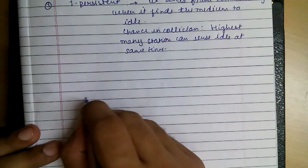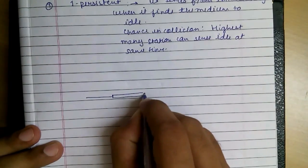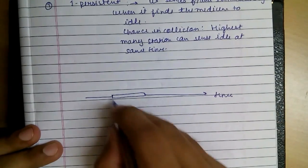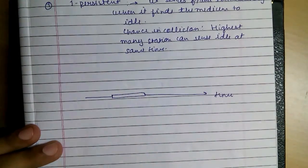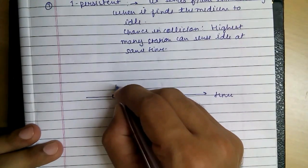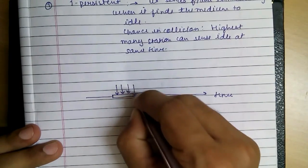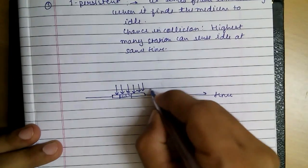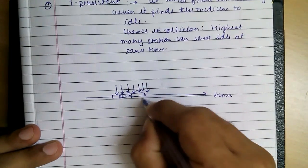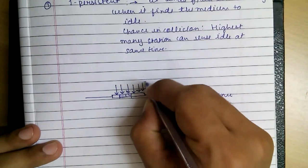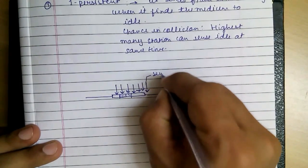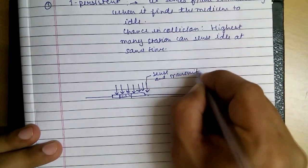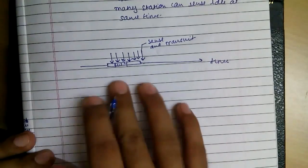By diagram we can say like, this is time and this is frame is sending, and we are using the one Persistence Method. So it is continuously sensing whether it is idle or not. Station is busy right now, so at this point it senses that it is idle, so at this point it will sense and transmit. Okay, fine.